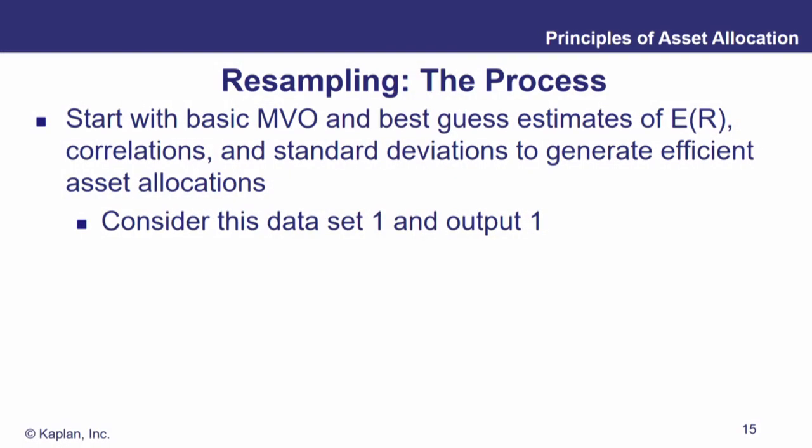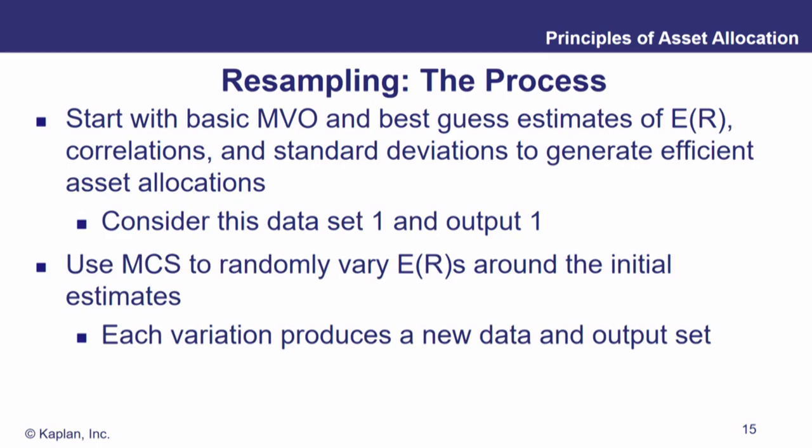The process starts with the basic mean variance optimization — our best guess estimates of expected returns, correlations, and standard deviations. But we don't stop there. We use Monte Carlo simulation to randomly vary the expected returns, allowing those estimates to vary along their own distribution for each value in the model. Each time we change those expected return estimates and rerun the mean variance optimization, we get a new data set and a new output. We can run this thousands of times, and as all these values converge and average together, we get more diversified, more balanced portfolios.